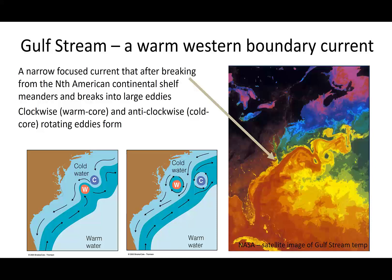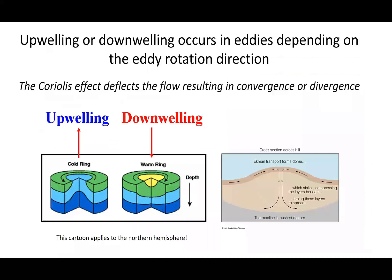Can we explain that phenomenon? Yes, we can, using the Ekman transport phenomena that we've already learned about during this lecture. The Coriolis effect in the northern hemisphere deflects water to the right, so if we have an eddy spinning in a clockwise direction, the water tends to be deflected to the right and that piles up water towards the center, creating convergent flow towards the central axis of rotation of the eddy.